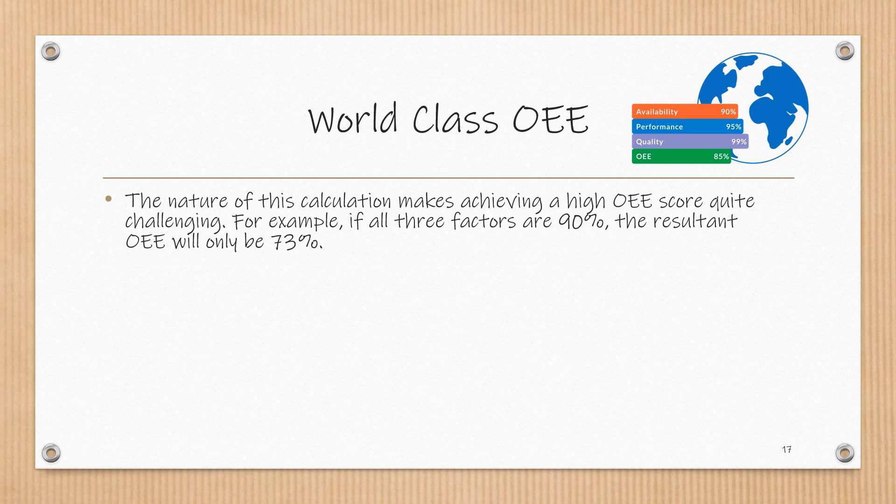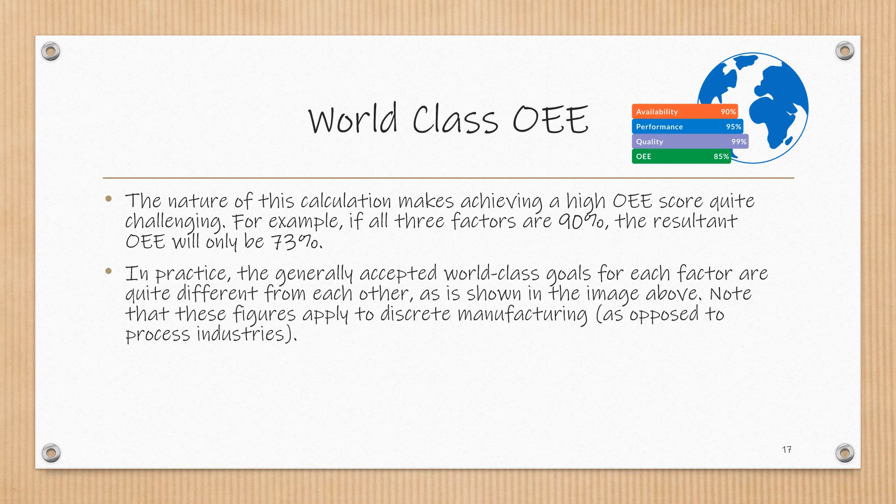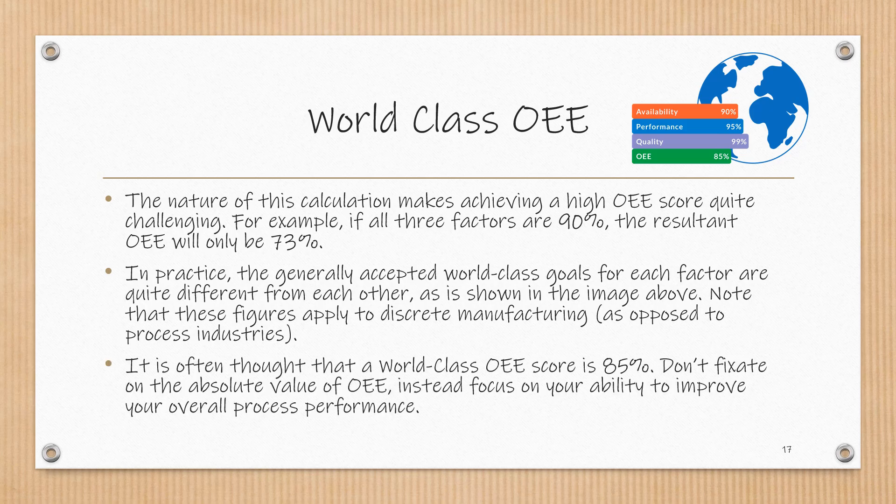The nature of this calculation makes achieving a high OEE score quite challenging. For example, if all three factors are 90%, the resultant OEE will only be 73%. In practice, the generally accepted world-class goals for each factor are quite different from each other, as shown in the image above. Note that these figures apply to discrete manufacturing as opposed to process industries. It's often thought that a world-class OEE score is 85%, but don't fixate on the absolute value. Instead, focus on your ability to improve your overall process performance.